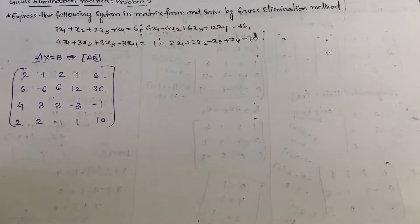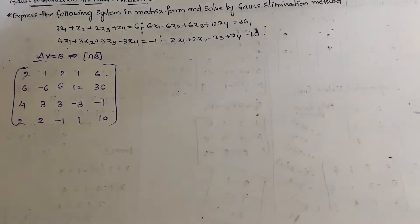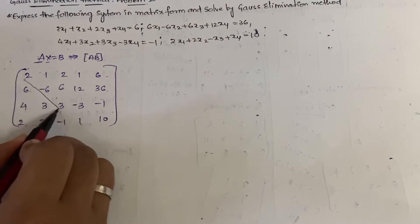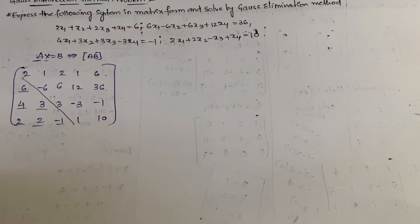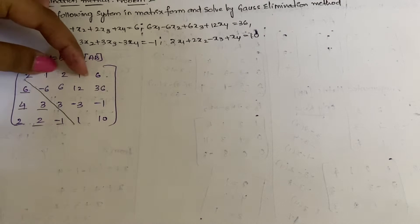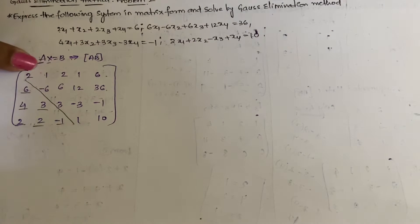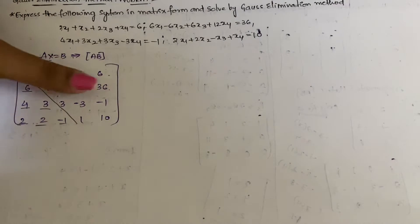For echelon form, the first row first element should be 1 to make calculations easy. We can only do row operations. None of the rows have 1 as the first element, so we can't just interchange. We could divide row 1 by 2, but that introduces fractions. Instead, let's divide row 2 by 6 — that gives us 1, -1, 1, 2 | 1 with no fractions, all whole numbers.